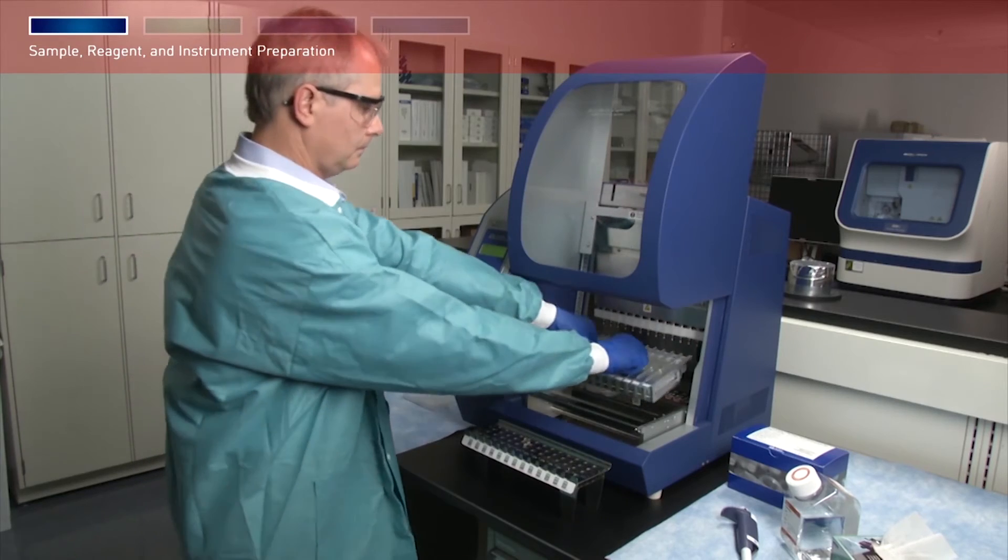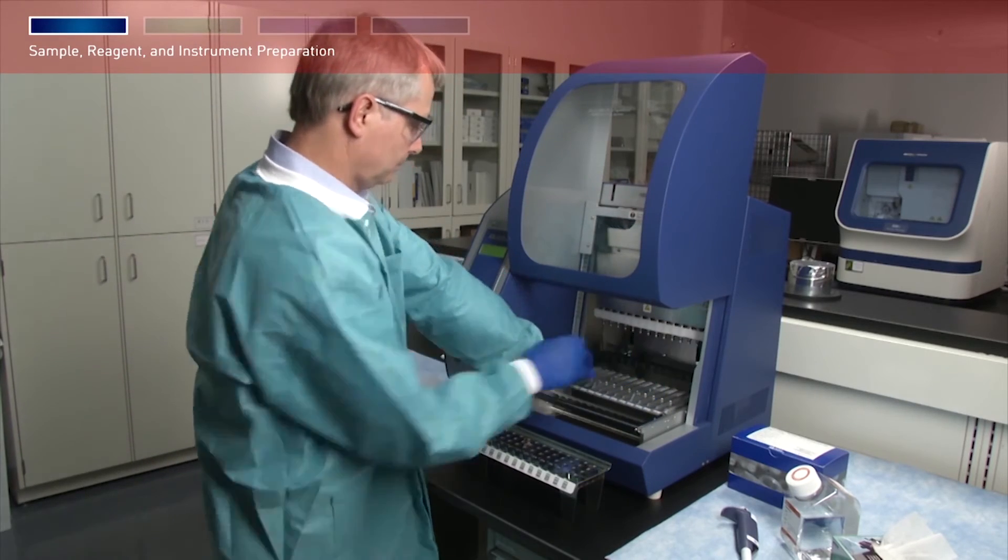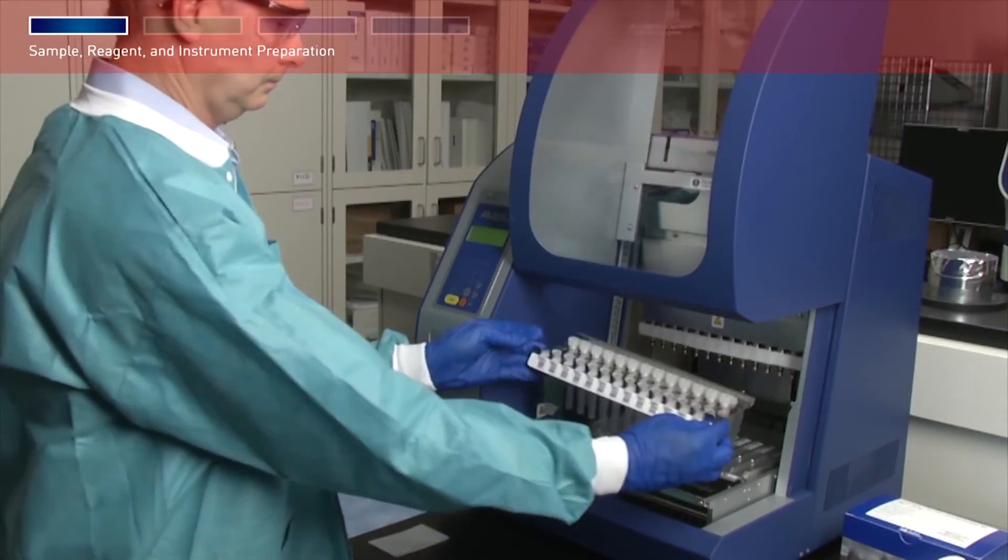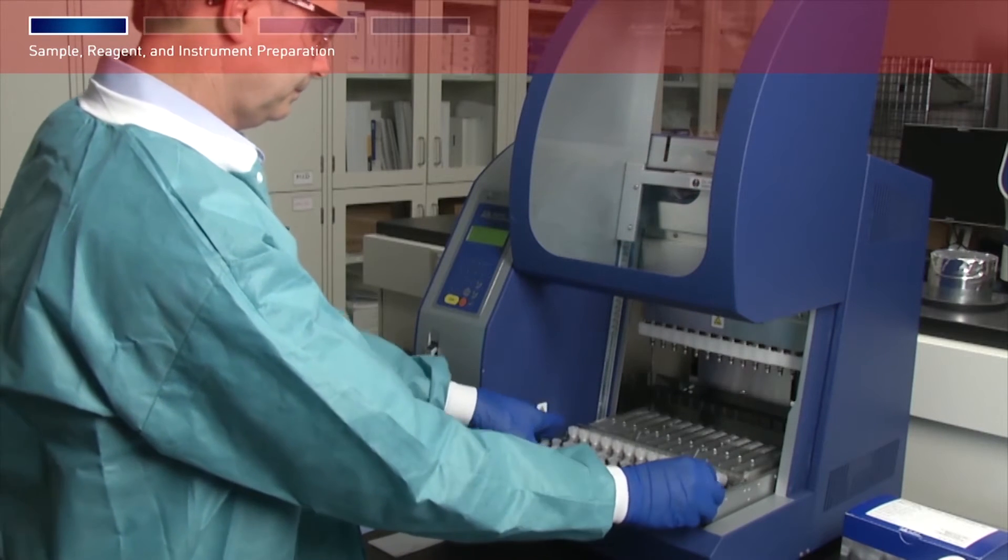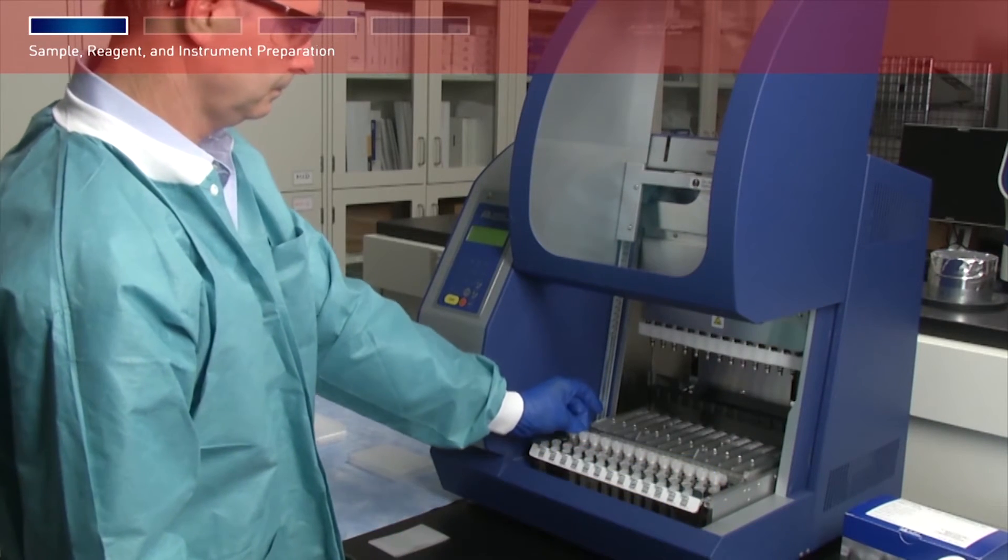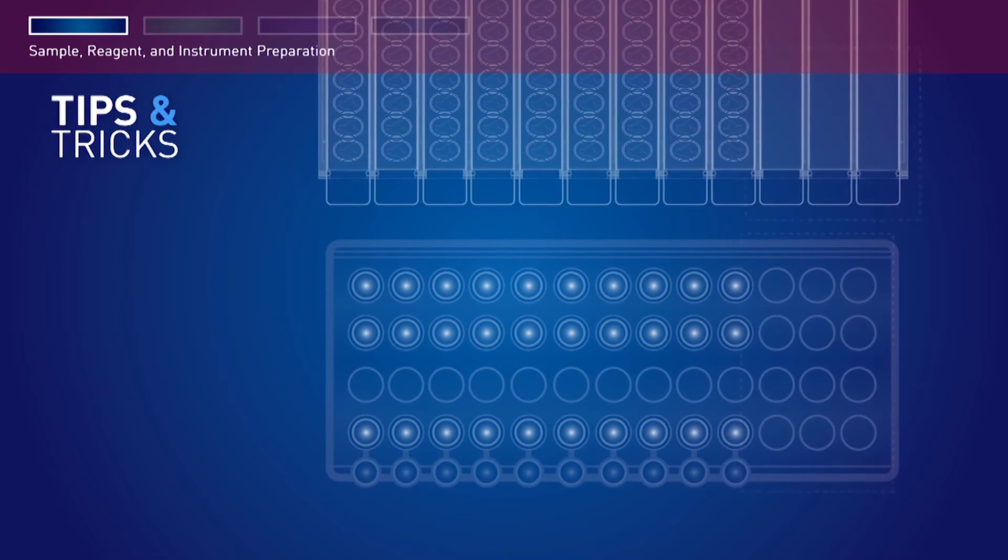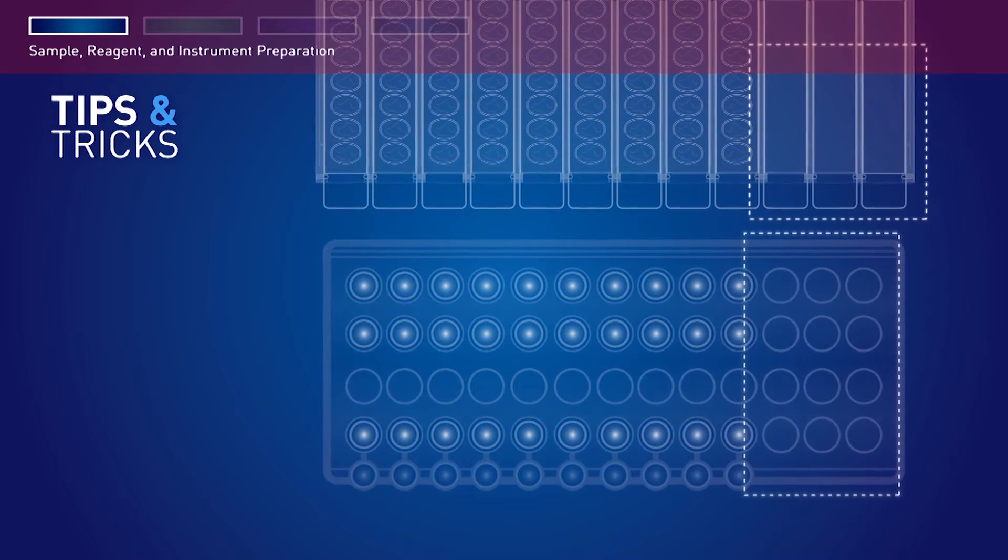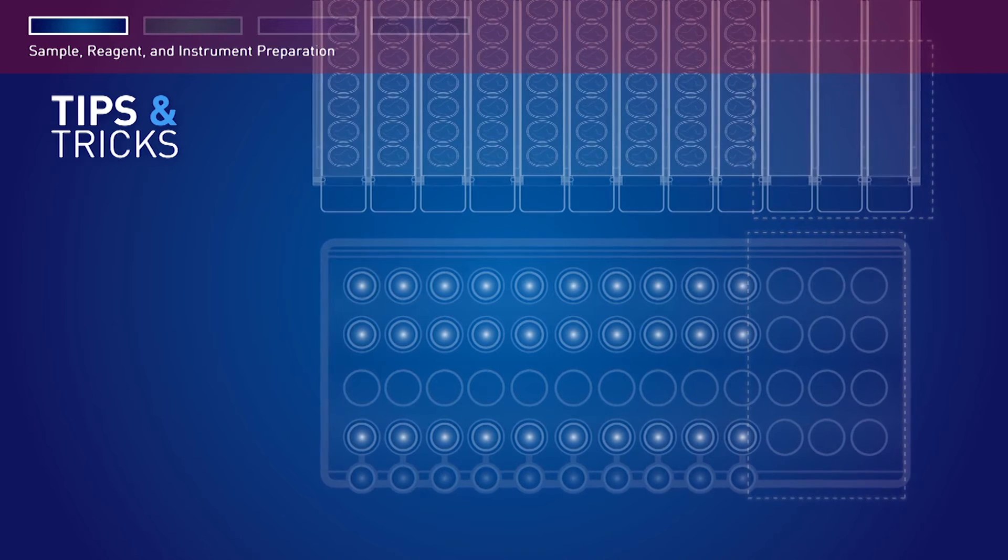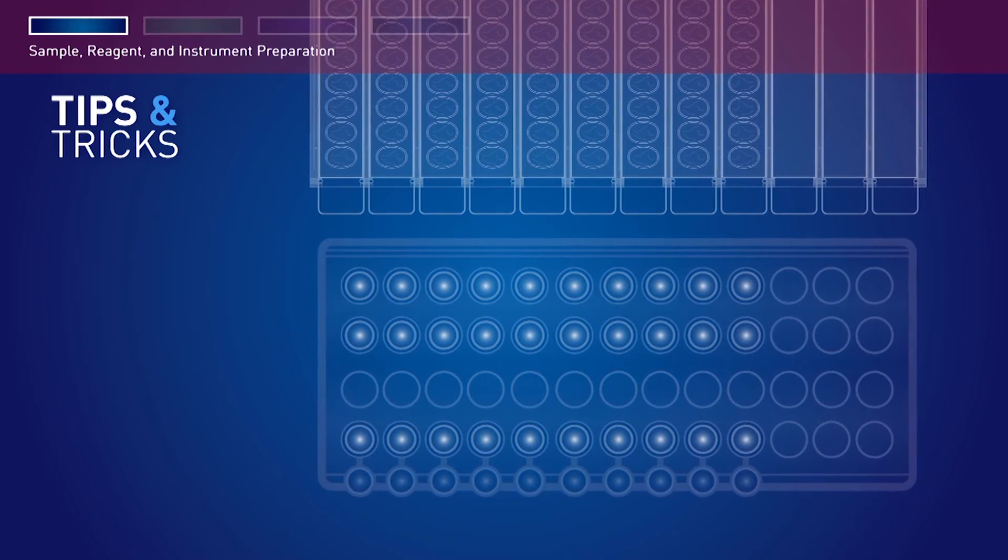Load the cartridge rack into the instrument first, followed by the tip and tube rack. Changing the order of loading the racks may cause the instrument to stop during a run operation. If you are processing fewer than 13 samples, make sure to load the tips and tubes in the same positions as the reagent cartridges that are loaded in the cartridge rack.